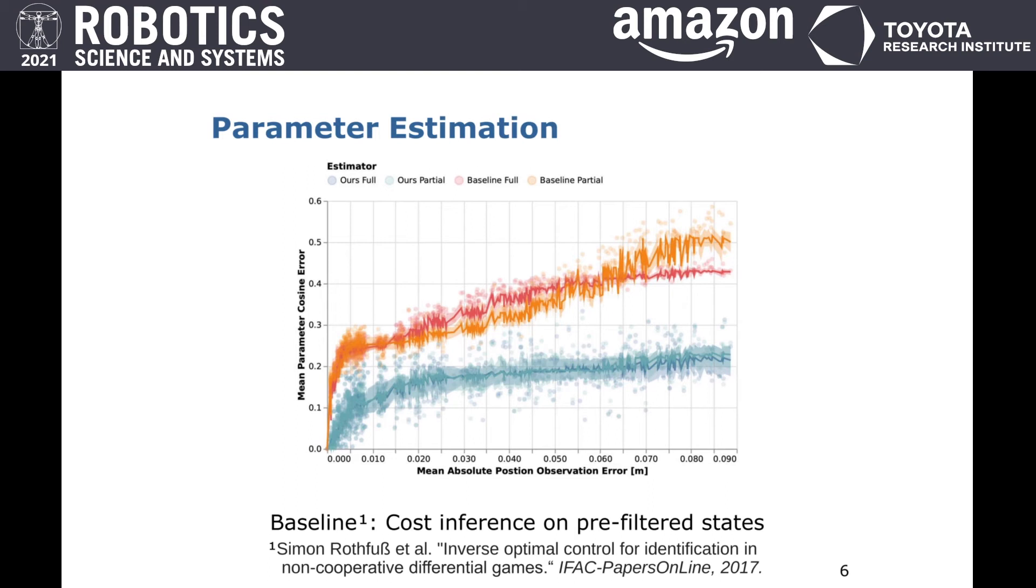This figure shows the estimation error of both methods in parameter space for the highway driving scenario introduced earlier. The results show that our method, here shown in blue, identifies the true objectives of observed players more accurately than the baseline.